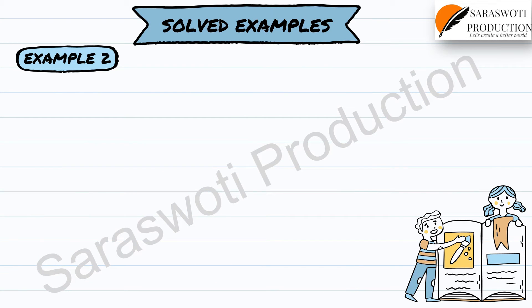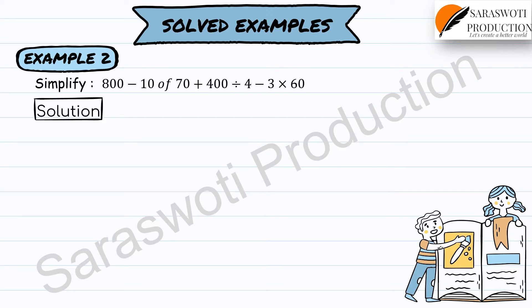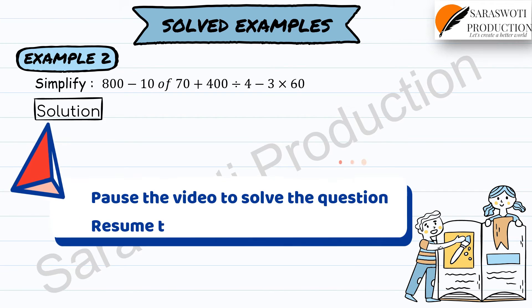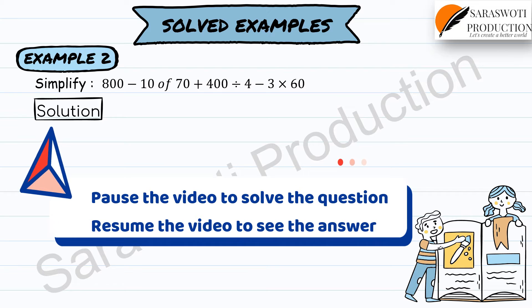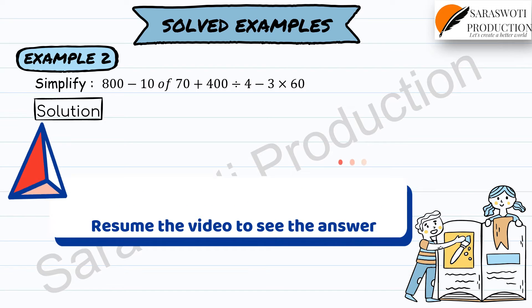Example 2: Simplify 800 minus 10 of 17 plus 400 divided by 4 minus 3 × 16. Pause the video to solve the question, then resume to see the answer.